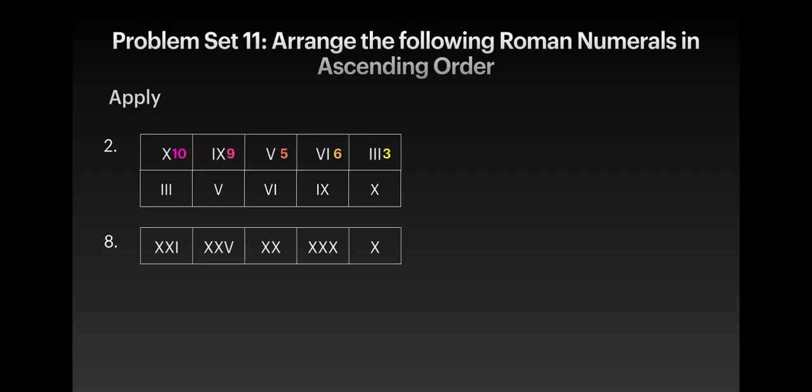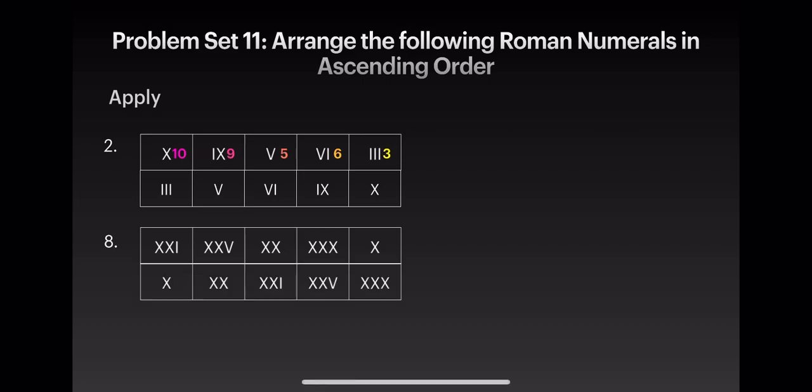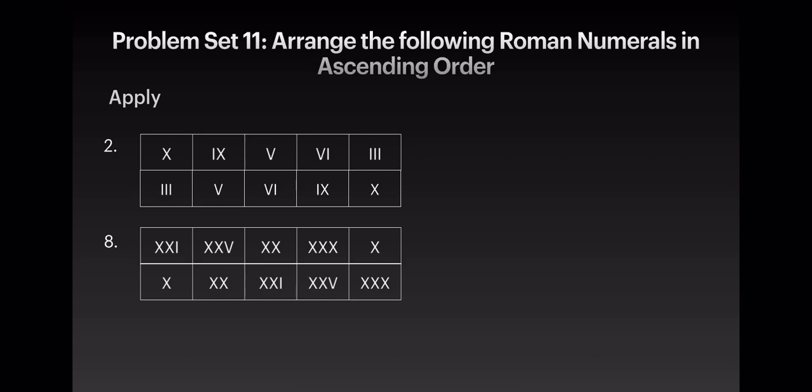Moving on to the eighth sum: XXI is 21, XXV is 25, XX is 20, and XXX is 30. Arranging them in ascending order from small to big: XX, XXI, XXV, and XXX. Moving on to the second objective — the international place value chart.